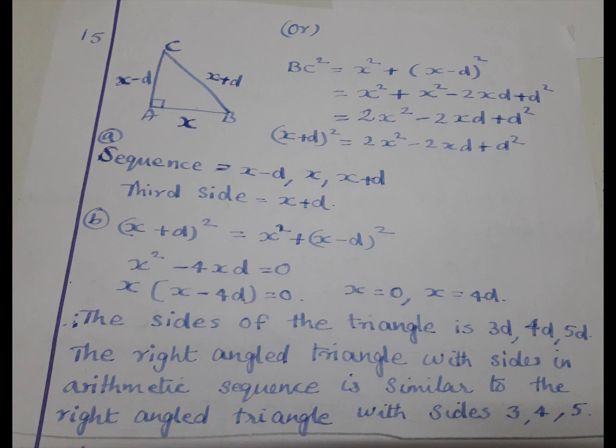The sides of the triangle is 3d, 4d and 5d. The right-angled triangle with sides in arithmetic sequence is similar to the right-angled triangle with sides 3, 4, 5.